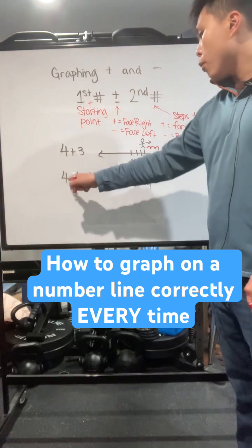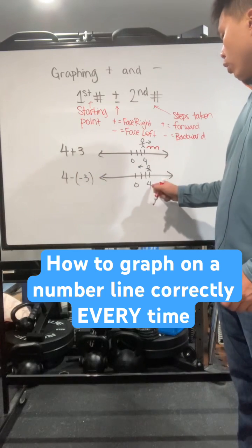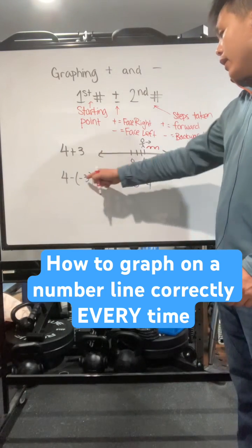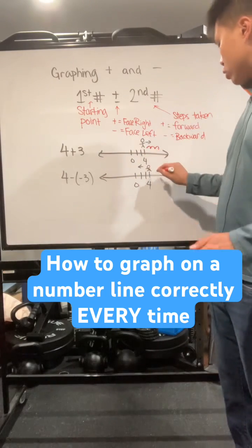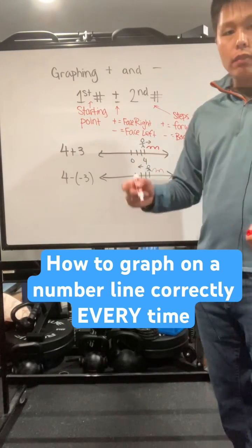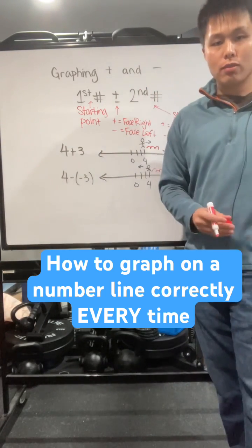This one right here, four minus a negative three. So four minus, so you're looking at your left. And negative three, that means you're going backwards three times and it's still seven. So that's a way to think about graphing numbers. That's a good one.